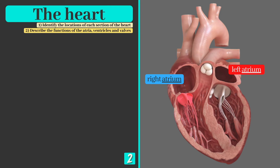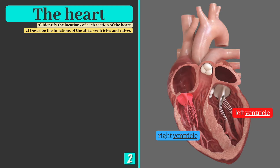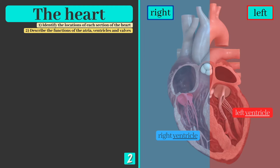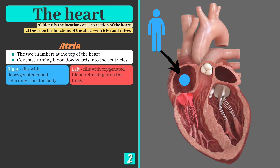The heart is made of four chambers. The right and left atria can be found at the top while the ventricles sit just below. To remember which side is left and right, imagine the image you're looking at is your own heart and that you're facing outwards towards the screen.